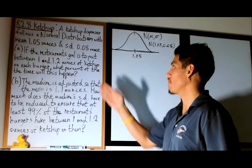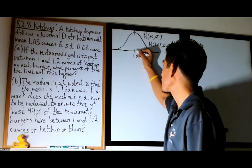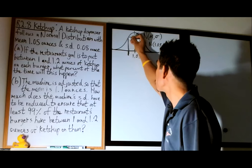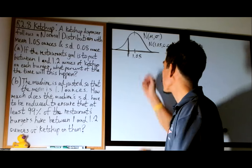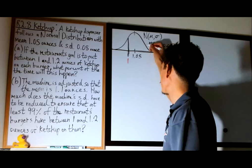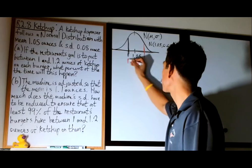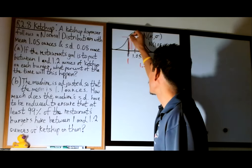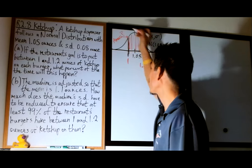We want to find essentially the area of this curve between 1 and 1.2. So 1 is going to be to the left of 1.05, and 1.2 will be to the right. This shaded area is going to represent our percent, so we want to find that. Our goal is to figure out that area.